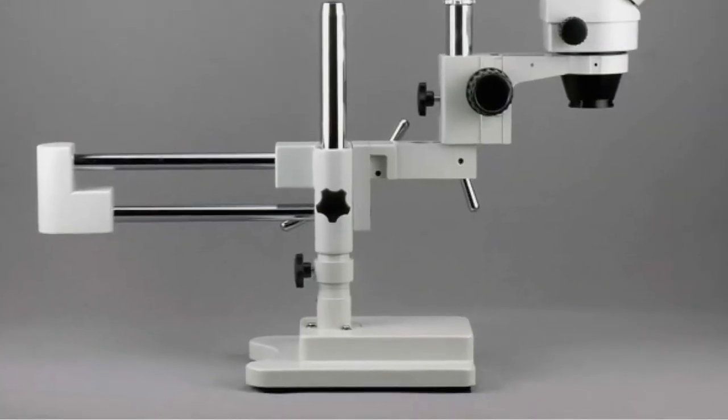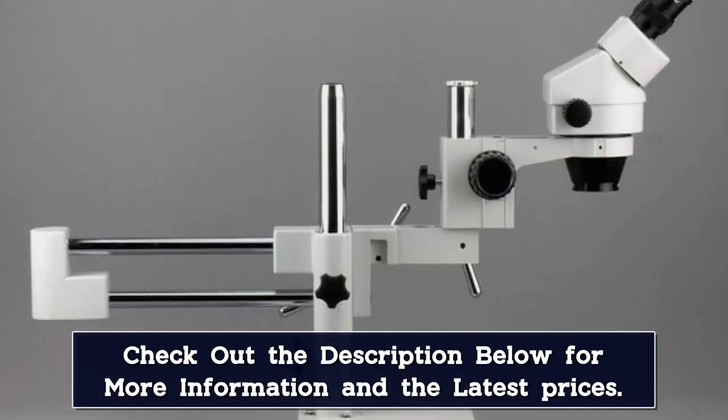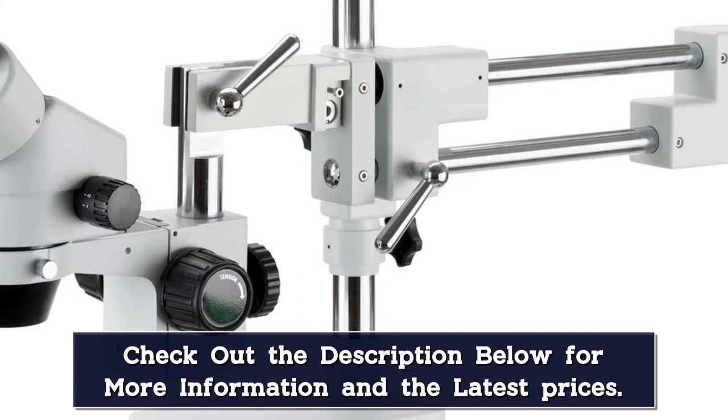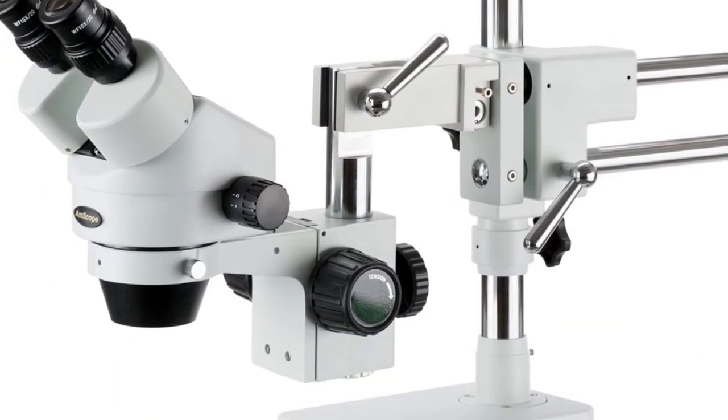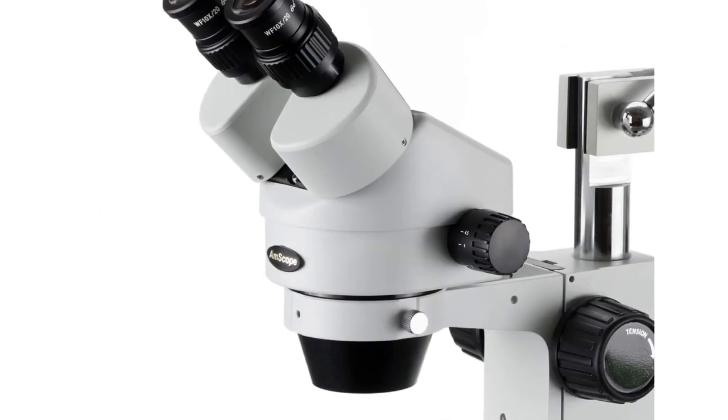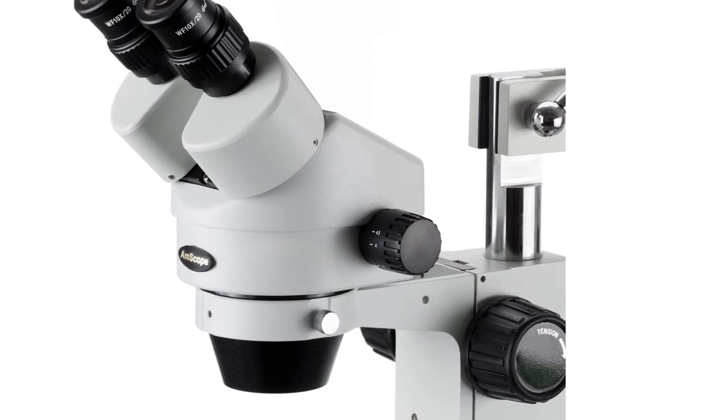Double arm boom stand has 20 inches arms and 17 inches pillar to enable users to position the microscope head on three axes: X, Y, and Z. Ambient lighting illuminates the specimen, eliminating the need for power or battery. 0.7x-4.5x zoom objective provides continuous zoom magnification and longer focal length for inspecting large-scale specimens.